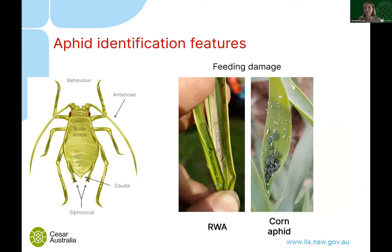Feeding damage is another identification clue. Russian wheat aphid is a good example — it produces characteristic long purple striping damage. A corn aphid causes the leaves to twist up.